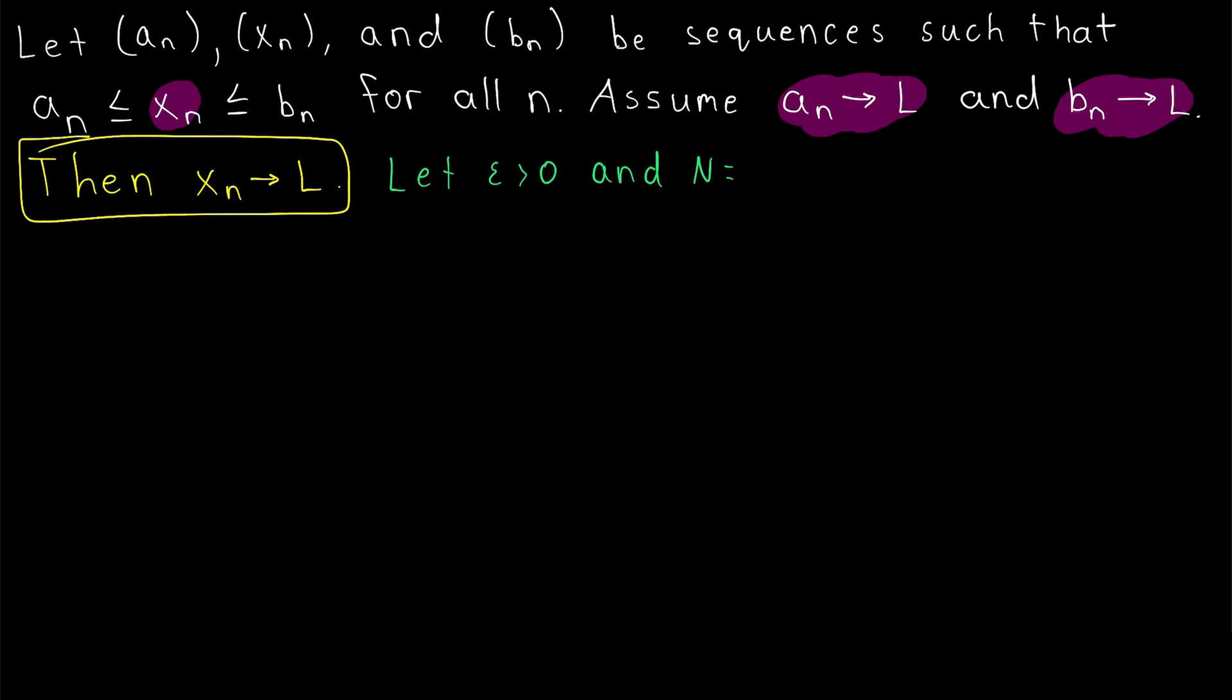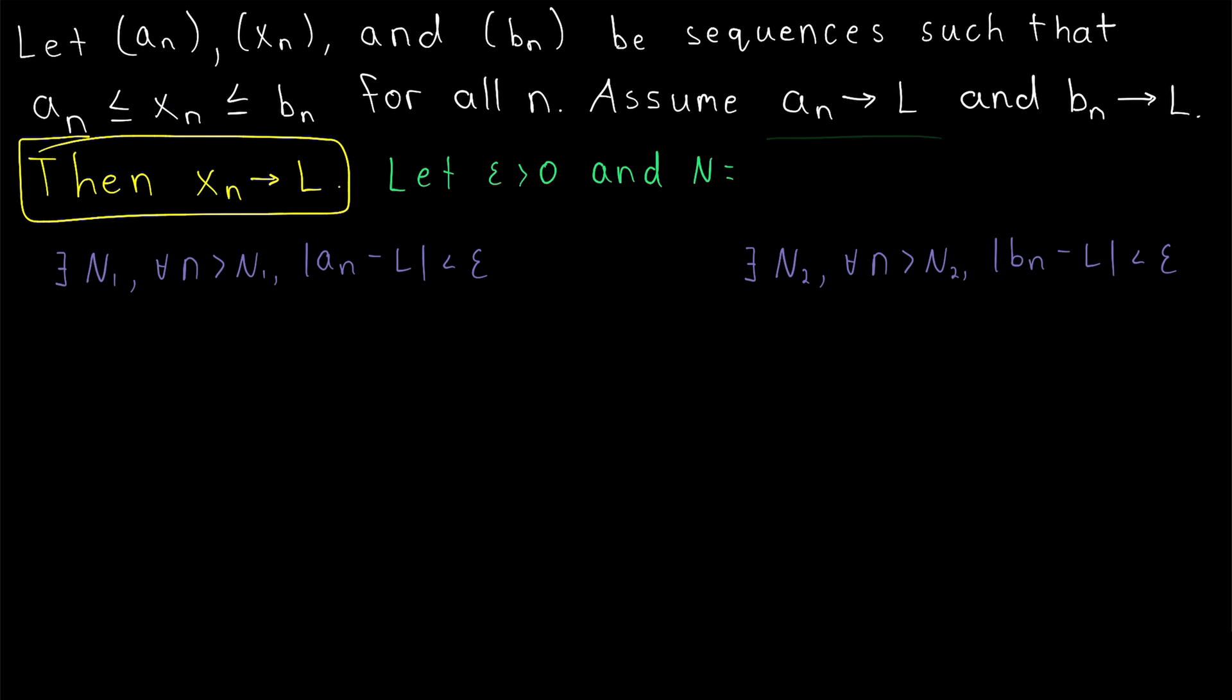Since it seems pretty straightforward, let's just go ahead and apply the definition of a convergent sequence to a_n and b_n.